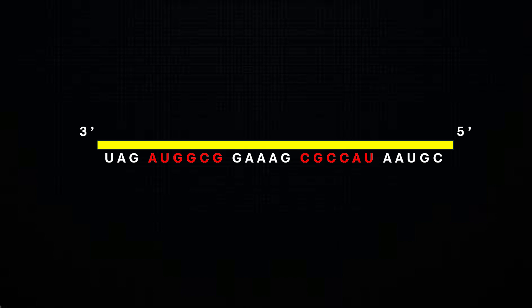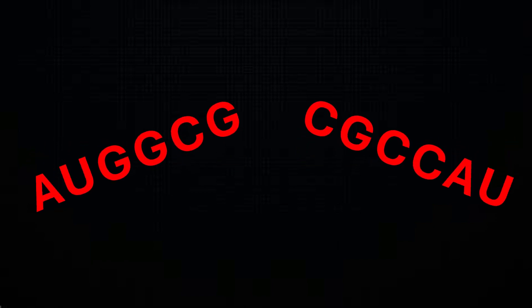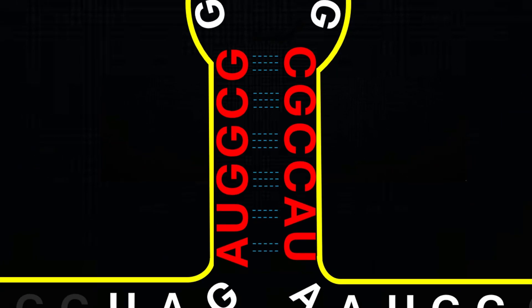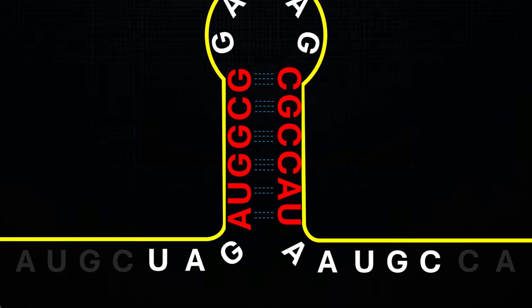At first, this just looks like a random sequence of nucleotides. However, if we look at the highlighted regions and set them next to each other, we find that they are complementary to each other. This causes an RNA secondary structure to form, which we commonly call hairpins.